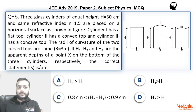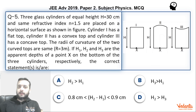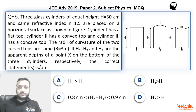Hi dear students! Let's see this question that came in JEE Advanced paper 2 Physics in the year 2019. This was one of the very easy questions in the whole paper from the topic of optics, and this was based on multiple choice correct scheme. Most of the students would have been simply thrilled to see this question because they easily collected some marks for themselves.